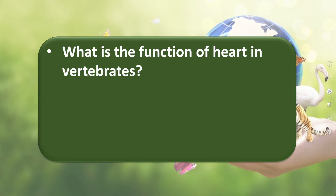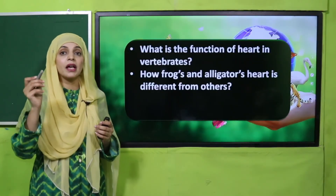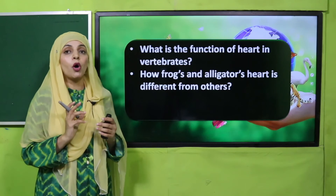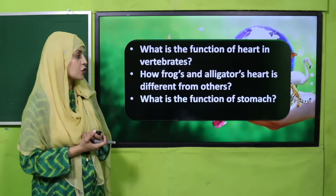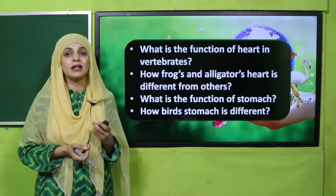Evaluation time: What is the function of the heart in vertebrates? It pumps oxygenated blood to all parts of the body and receives deoxygenated blood from the body, then pumps it back to the lungs. How is the frog's heart different? The frog has a three-chambered heart, but there is a septum that has started to develop, so oxygenated and deoxygenated blood mixes only slightly. What is the function of the stomach? It helps in digestion. How is a bird's stomach different? Birds have two types of stomach: gizzard and glandular.